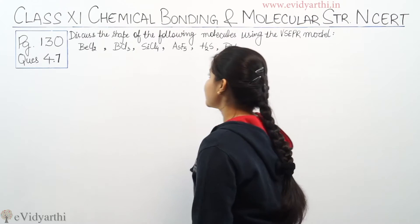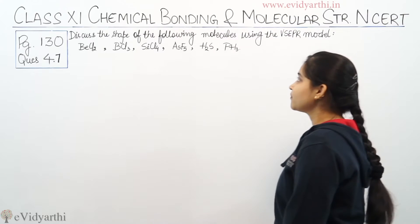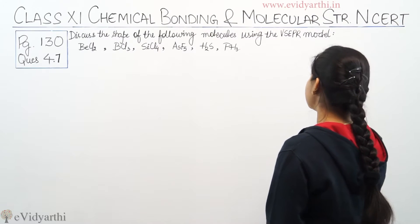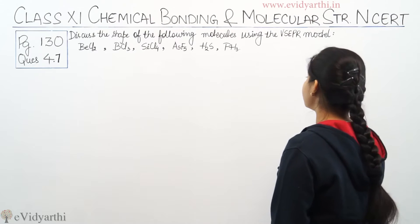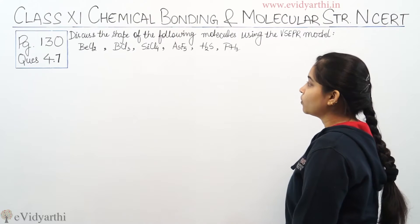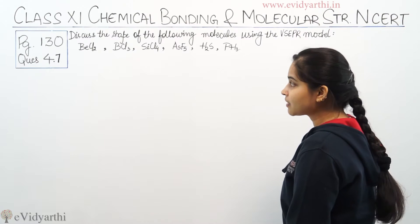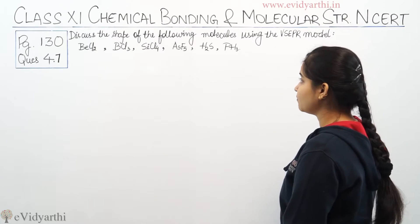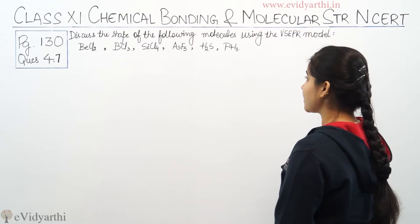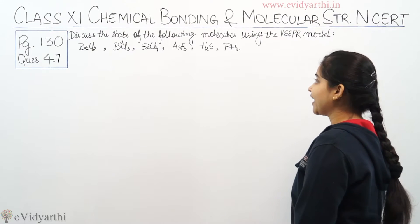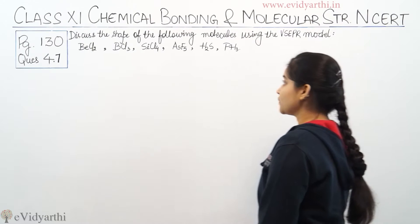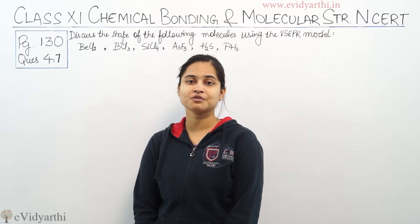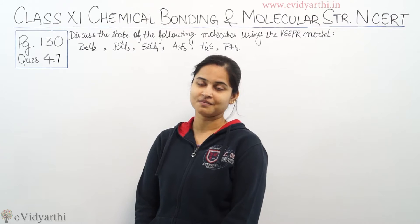The question is: discuss the shape of the following molecules using the VSEPR model. The molecules given to us are BeCl₂, BCl₃, SiCl₄, AsF₅, H₂S, and PH₃. We need to discuss the shape of these molecules according to the VSEPR model.